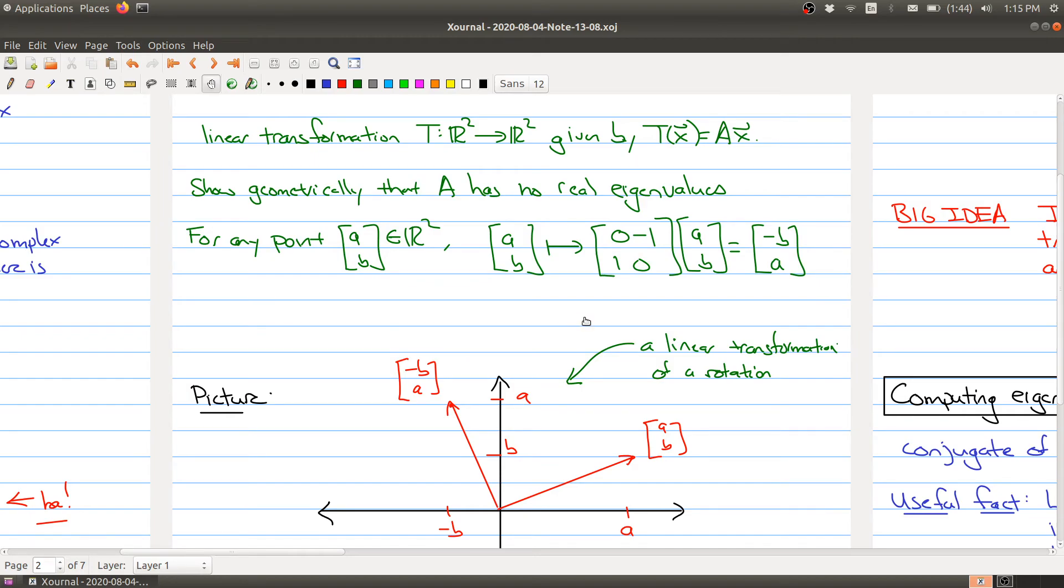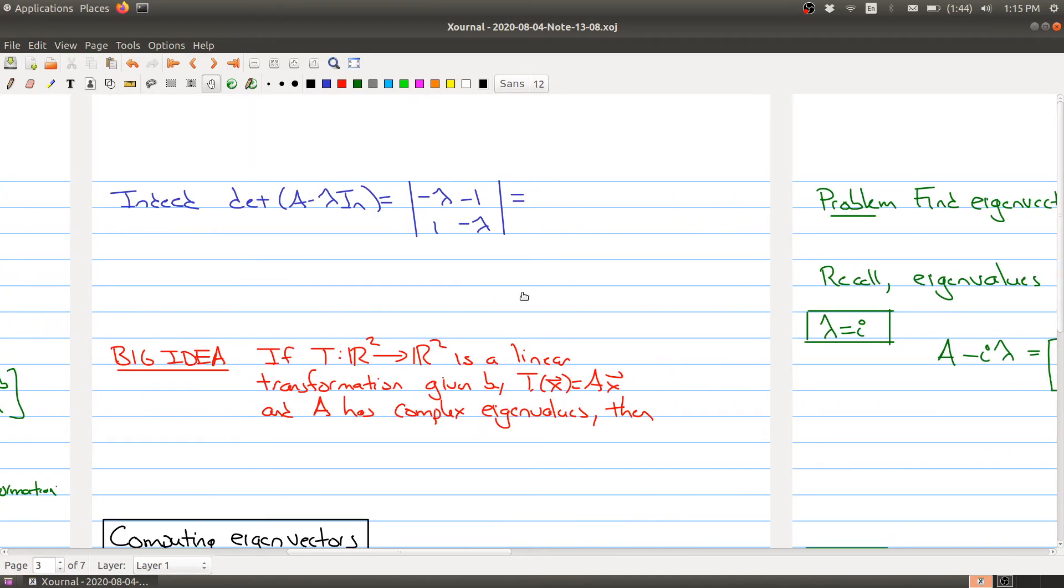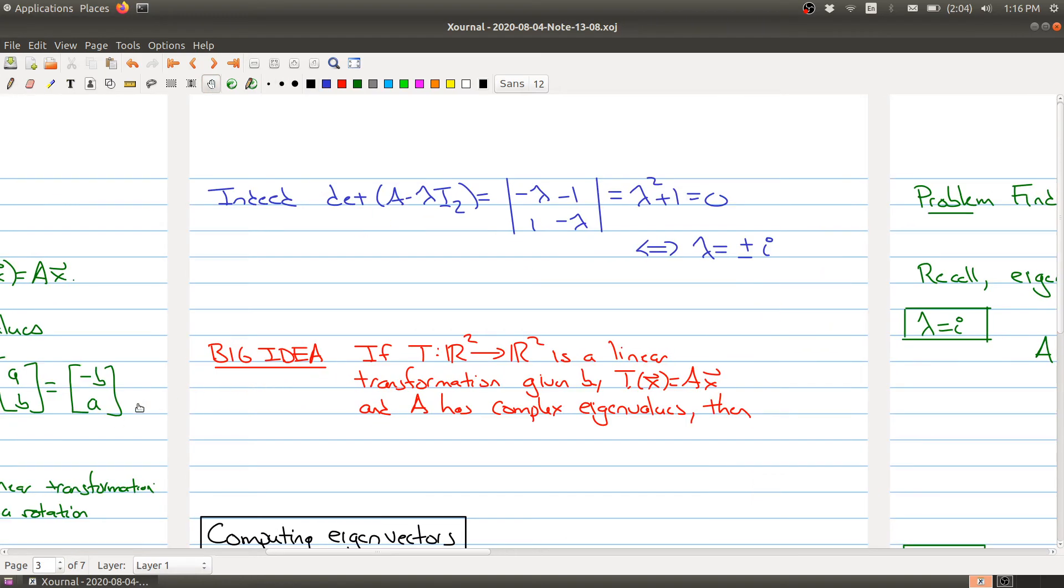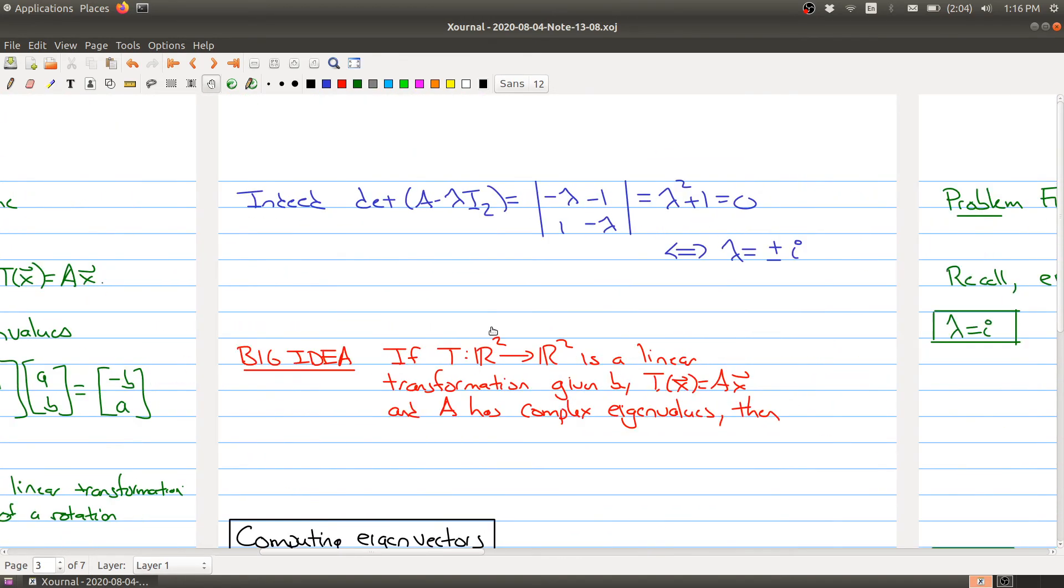Of course, we could have just done this algebraically. Let's just double check here. I'm going to compute the characteristic equation. So I take A minus lambda I_2, we cook up our matrix and here I get lambda squared plus 1 equals 0. And notice that the only solution here is lambda equals plus or minus the imaginary number i. So the geometry already implied that we shouldn't find any real eigenvalues and the algebra verifies that this is indeed the case.